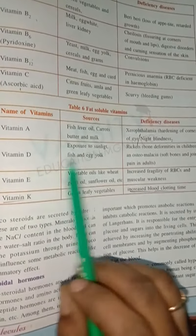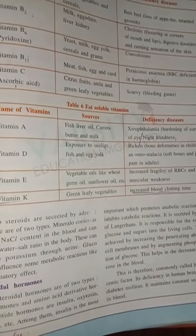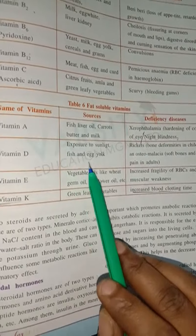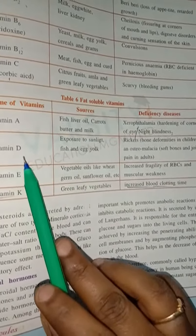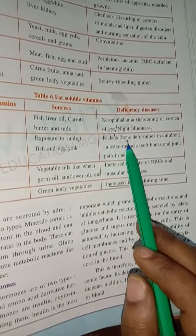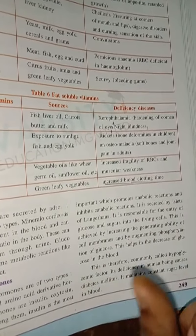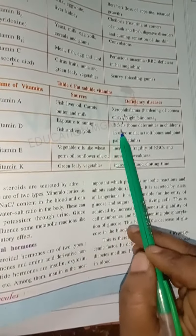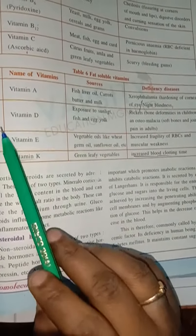Vitamin D is obtained from exposure to sunlight in the early morning, and is also present in fish and egg yolk. Deficiency of vitamin D causes rickets — bone deformation in children, where bones become very soft — and joint pains in adults.